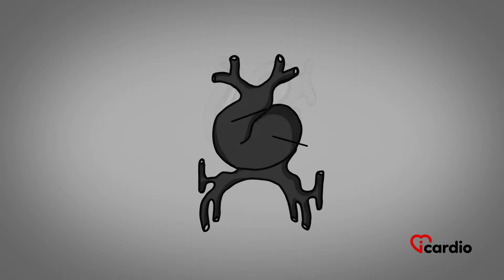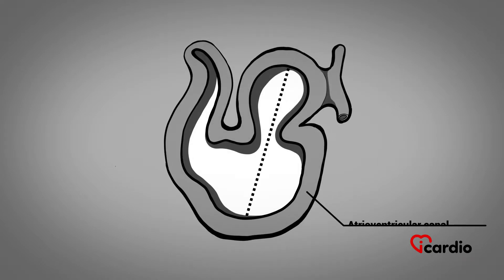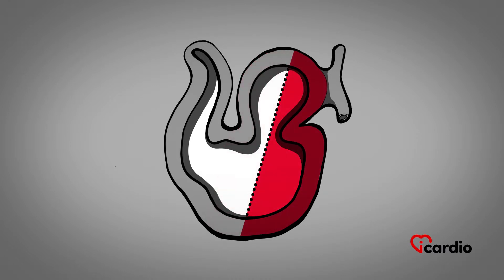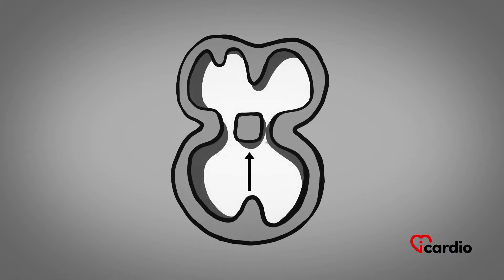A septum forms in the atrioventricular canal to separate it into two parts, the right and the left, in the middle of the fourth week. The ventricular septation occurs from bottom to top at the same time as the newly formed left and right ventricular cavities expand.